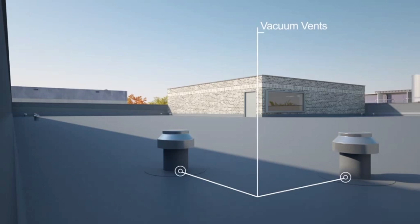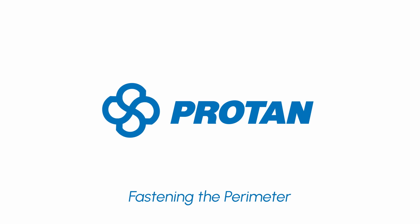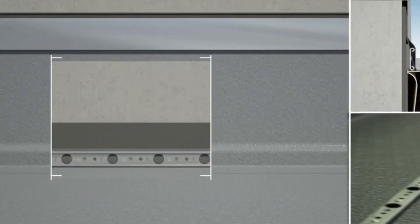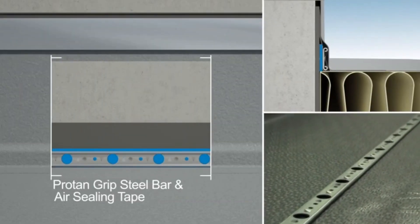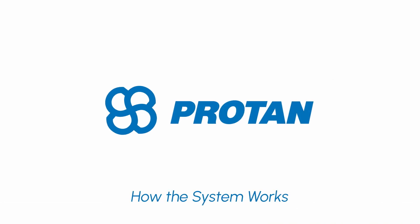The only mechanical attachment of the membrane is at upstands, changes of angle, penetrations, and outlets. The perimeter is secured using the Protan grip steel bar with air sealing tape behind the reinforced membrane strip to ensure the roof system is airtight.